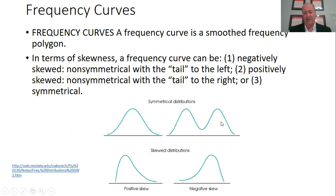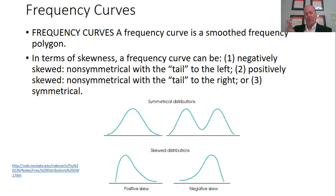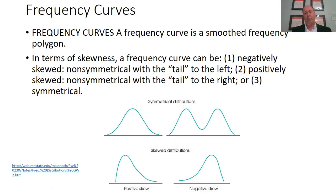There are different kinds of frequency curves. Under symmetrical distributions, this one here is kind of like what we were talking about on the last slide. It's a symmetrical distribution — you could take this distribution and bisect it, meaning you could draw a line right in the middle and you'd have an equal amount of the curve on the right-hand side and an equal amount on the left-hand side. That is important because when we see a distribution that is symmetrical like that, we can make some important statements about the entire population of that particular distribution.